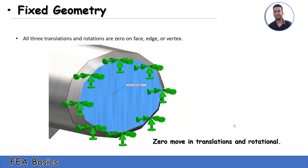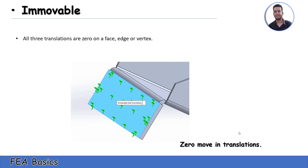Now we will talk about the standard fixture types in SolidWorks. We will start with fixed geometry. For fixed geometry, all translation and rotation are zero. When you select this face, that means zero in translation and rotation.